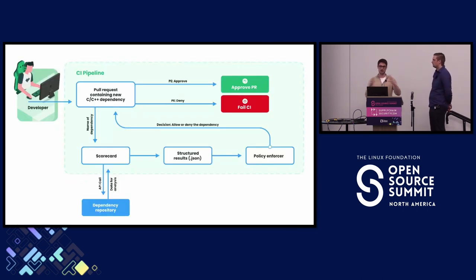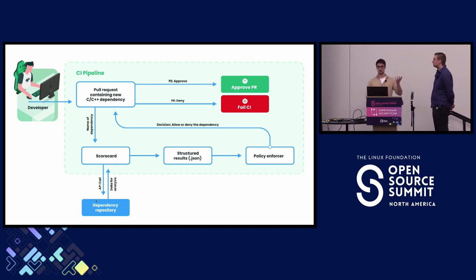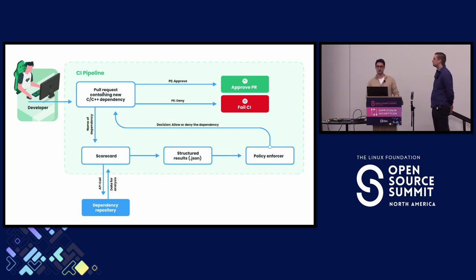The whole point is that you can set up a larger workflow. A developer makes a pull request introducing a new dependency into your repository. Scorecard makes an API call to GitHub to start analyzing the project using the Scorecard analysis engine. The output is structured results, and your own policy enforcer then goes back to your pull request — if the policy enforcer is happy, the PR is approved; if not, the PR fails. That's the high-level logic.